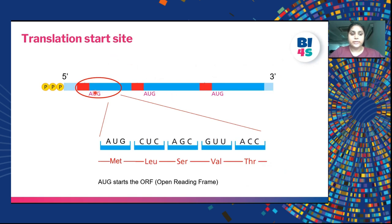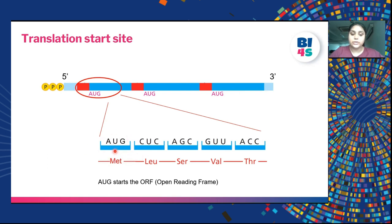The reading frame is determined by the translation start site, which is the codon AUG — translation always starts with AUG, which codes for methionine. For the same sequence beginning with CUC, if an AUG is present before it, the reading frame starts from AUG: methionine, CUC (leucine), AGC (serine), GUU (valine), ACC (threonine). Therefore AUG starts the open reading frame.